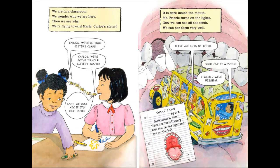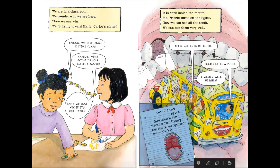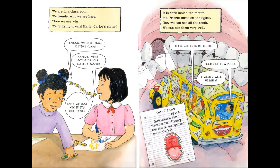It is dark inside the mouth, so they went right into this girl's mouth. Miss Frizzle turns on the lights and now we can see all the teeth very well. There are lots of teeth — look, one is missing! Arnold says, 'I wish I were missing,' meaning he doesn't want to be here. Let's read DA's short note: 'Two of a Kind — teeth come in pairs. There are two of every kind, one on the right and one on the left.'